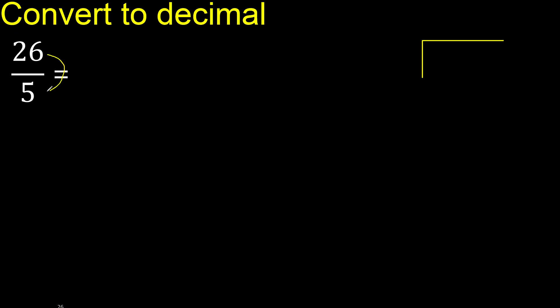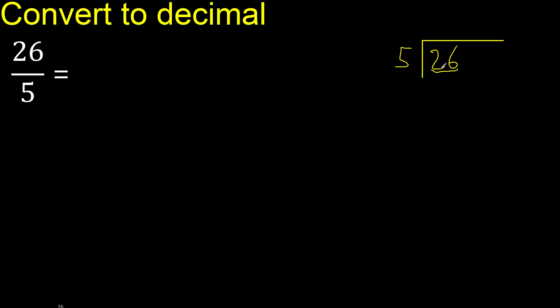26 divided by 5. 2 is less, therefore next digit. 26 — 26 is not less, therefore we work with 26.